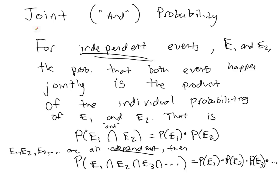We want to talk briefly about joint probability. Another word for joint probability is typically AND probability, because we want one event and another to occur — although the word AND doesn't necessarily have to be there. Really we mean two events that are going to happen jointly.